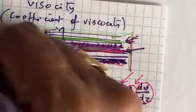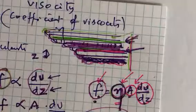And now this can also be written as kilogram meter inverse per second. This is also unit of viscosity coefficient.